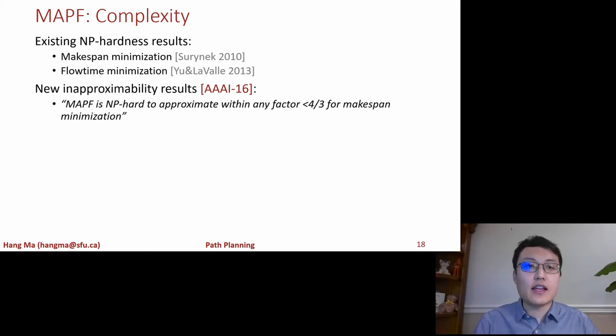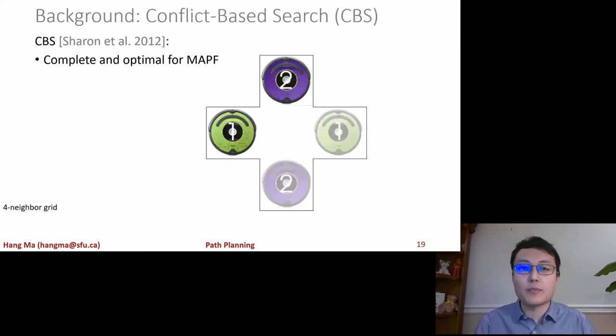So when we look at this problem the first question we ask is how hard is it to plan paths for multiple agents and how hard is it to solve MAPF? There are existing NP-hardness results showing that it is NP-hard to optimize the makespan and also optimize the flow time for MAPF. We've contributed new results showing that MAPF is NP-hard to approximate even within any factor less than four-thirds for makespan minimization. So MAPF is hard but we still want to come up with algorithms that can provide very good solution quality. So in AI we always solve NP-hard problems so the complexity itself doesn't scare us away.